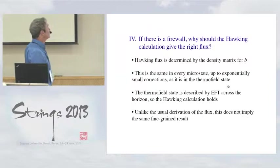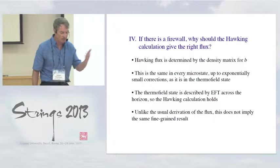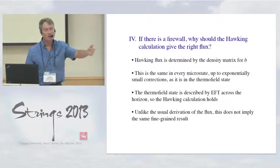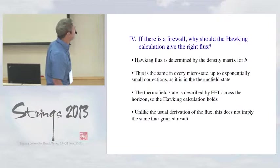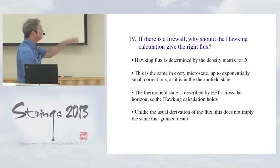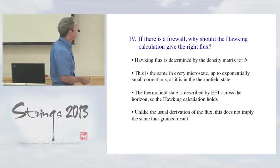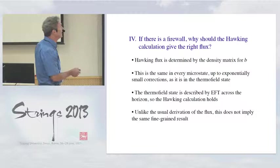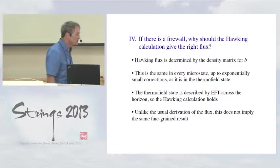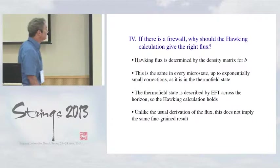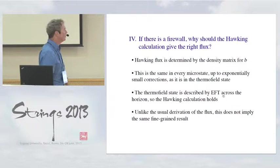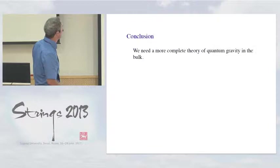In the last 30 seconds, there's a question that's been asked many times. If there is a firewall, why should the Hawking calculation give the right flux? Since the Hawking calculation, at least in most forms, like the adiabatic form, uses the fact that the geometry stretches across the horizon, well, okay, so the Hawking flux is determined by the density matrix for this outside mode B. Again, by properties of thermal equilibrium, this is the same for every microstate as it is in the thermofield state. Since the thermofield state does have a geometric interpretation, the Hawking calculation holds for it. And so by universality of thermal behavior, it holds for every state. And so without knowing anything about the interior for a general black hole microstate, you can conclude that the Hawking calculation is valid. And unlike the usual derivation of the flux, this doesn't imply that the fine-grained result will agree with Hawking's information-losing result.